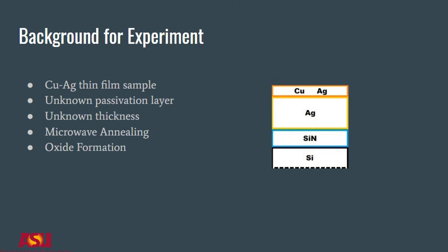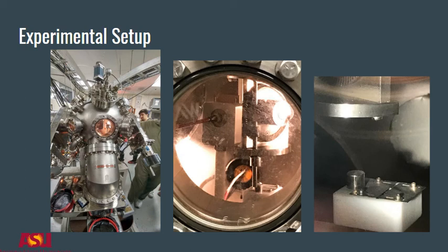For this lab, the RBS machine at Arizona State University was used. The components of this machine include a large, room-length particle accelerator, a chamber that maintains ultra-high vacuum, a sample mount to place the samples in the chamber, and a detector to determine the angle which particles are backscattered after interacting with the sample.